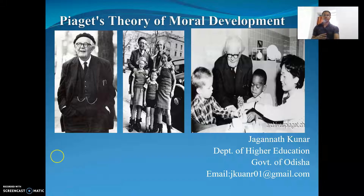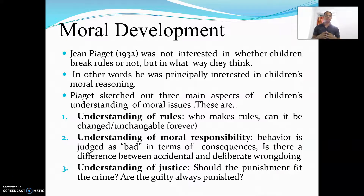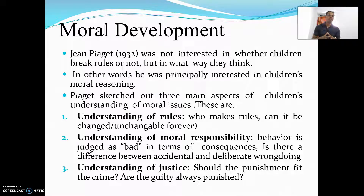Piaget was very much interested in children's moral development. In 1932 he developed this theory, and he was not exactly interested in whether children break the rules or not, but in what way children think. For that, Piaget sketched out three main aspects of children's understanding of moral issues.